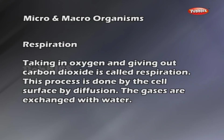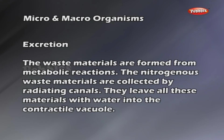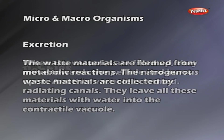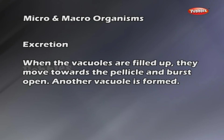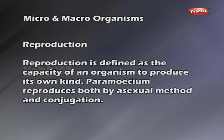Respiration: taking in oxygen and giving out carbon dioxide is called respiration. This process is done by the cell surface through diffusion, and gases are exchanged with water. Excretion: waste materials are formed from metabolic reactions. Nitrogenous waste materials are collected by radiating canals, which pass these materials with water into the contractile vacuole. When the vacuoles are filled up, they move towards the pellicle and burst open, then a new vacuole is formed.